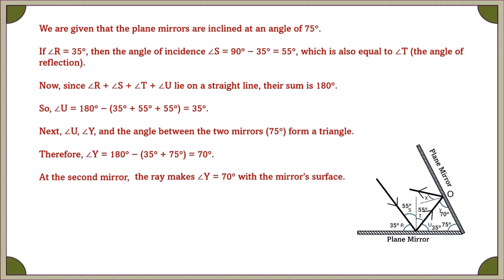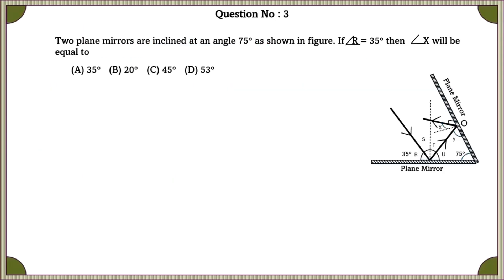At the second mirror, the ray makes angle Y is equal to 70 degrees with the mirror surface. So, with the normal, the angle is equal to 20 degrees, that is the angle of incidence. By the law of reflection, angle of incidence is equal to 20 degrees, which is equal to angle of reflection, which is equal to X. So, the angle of reflection, that is X, is equal to 20 degrees.